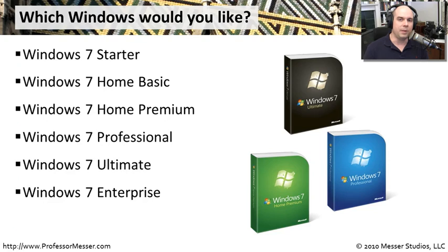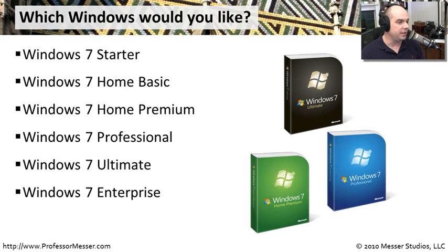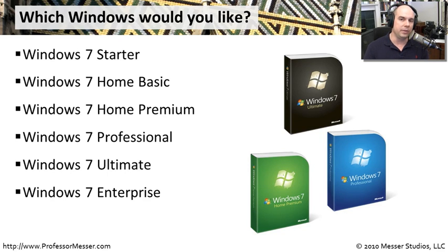If you've ever thought about buying or installing Windows 7 on your computer, you may have noticed there were many different editions. We're going to talk about each one — Windows 7 Starter, Home Basic, Home Premium, Professional, Ultimate, and Enterprise. It's important that you understand the differences between all of these, because in different environments you may have different requirements, and each edition is a little bit different than the others.